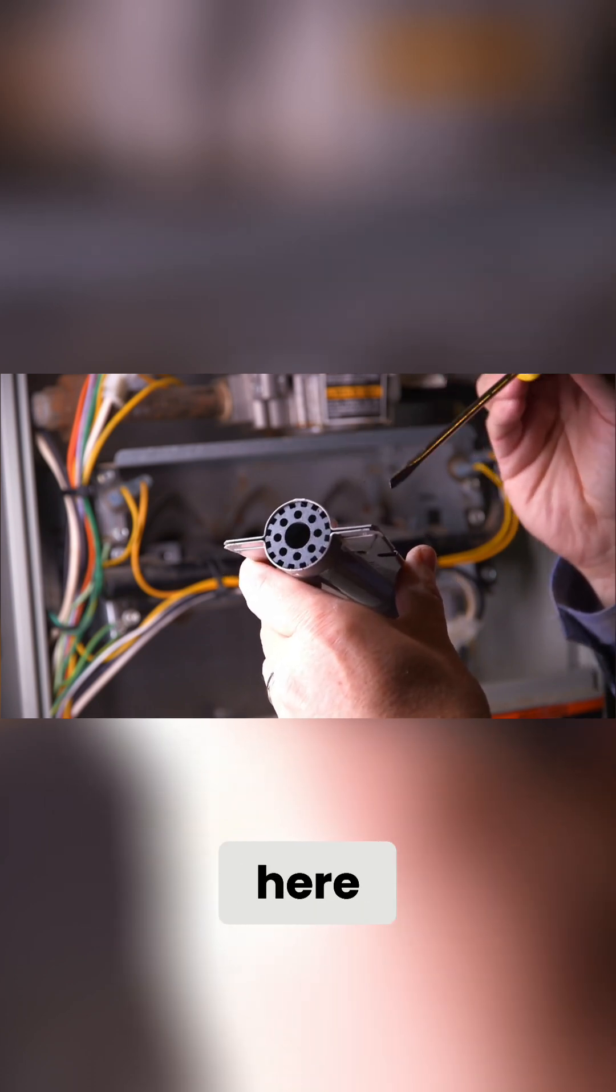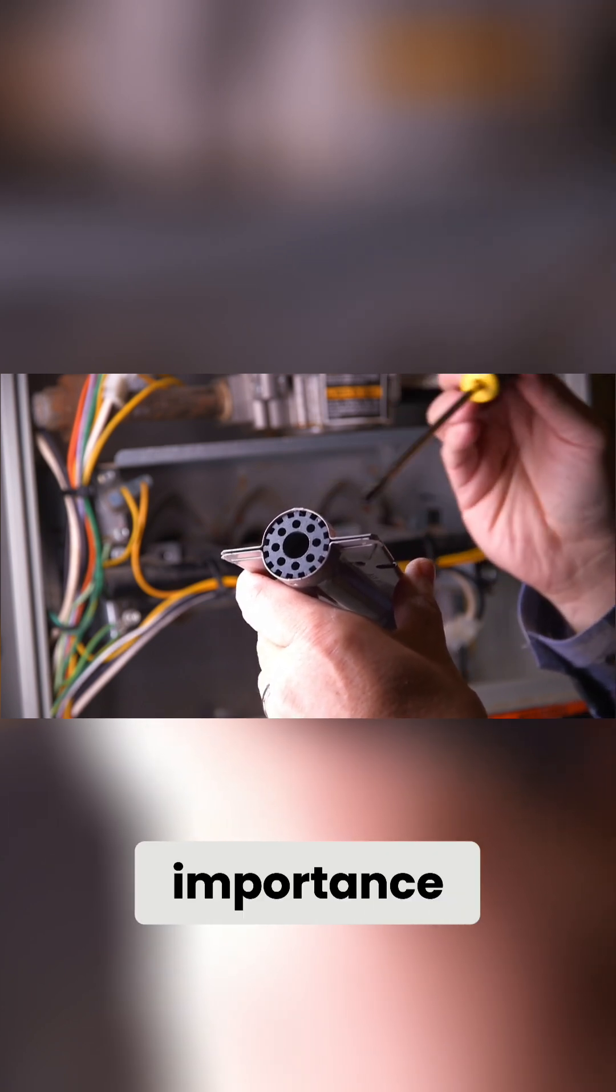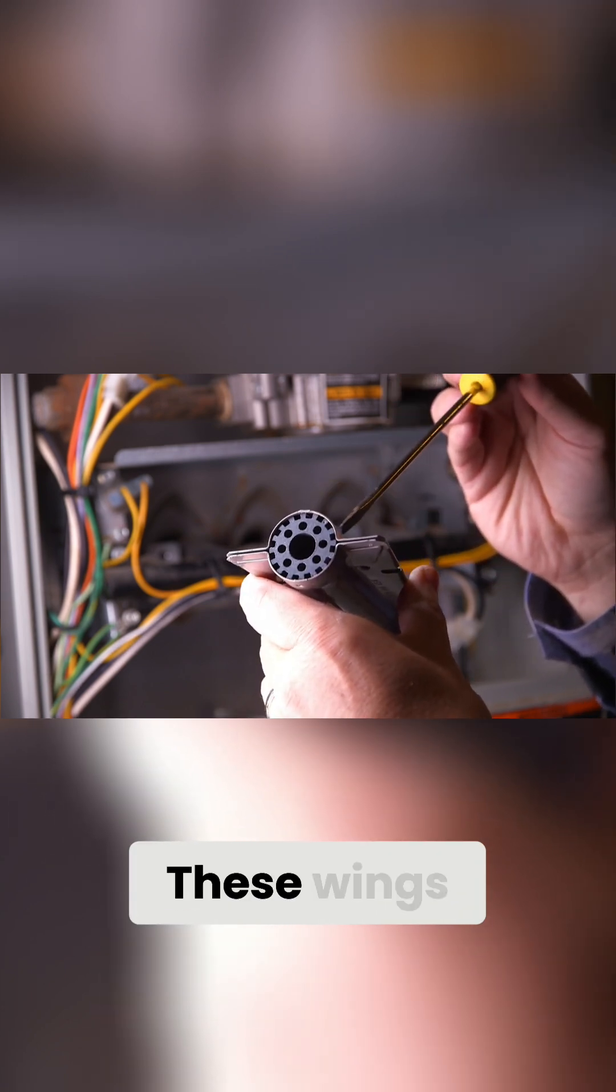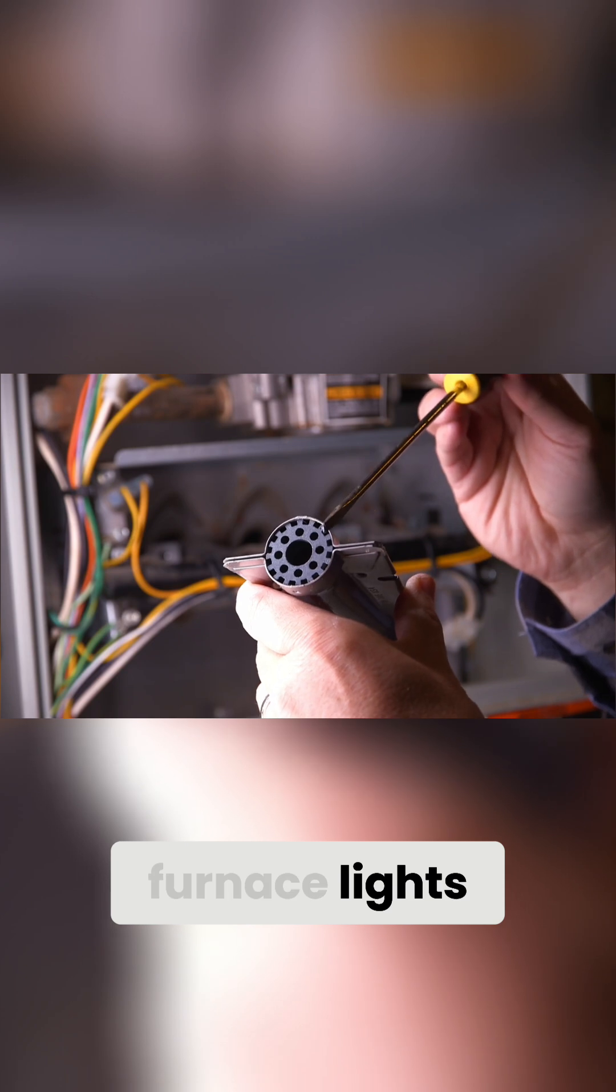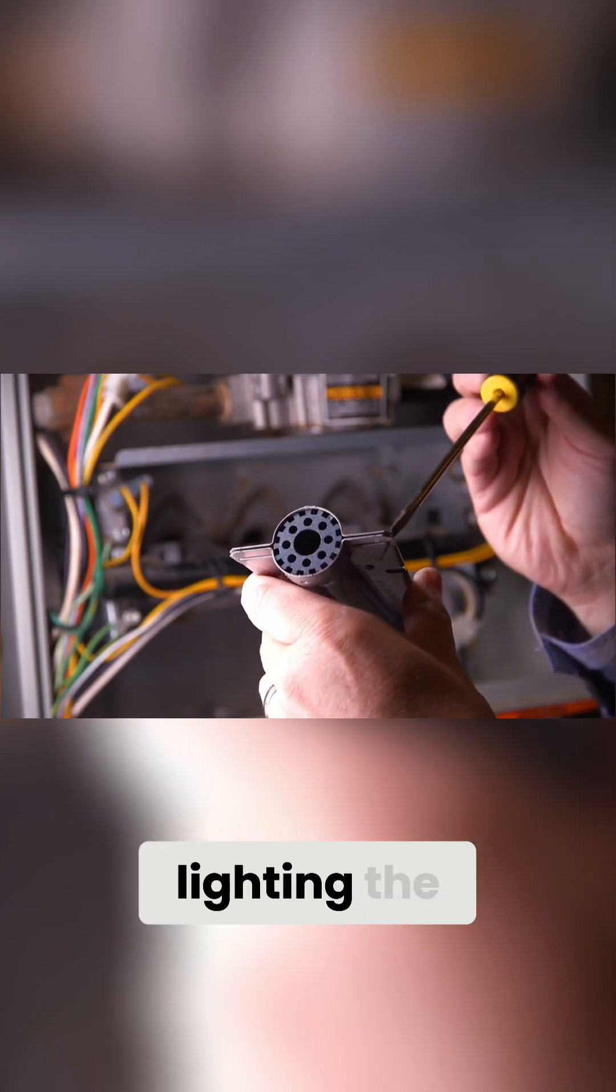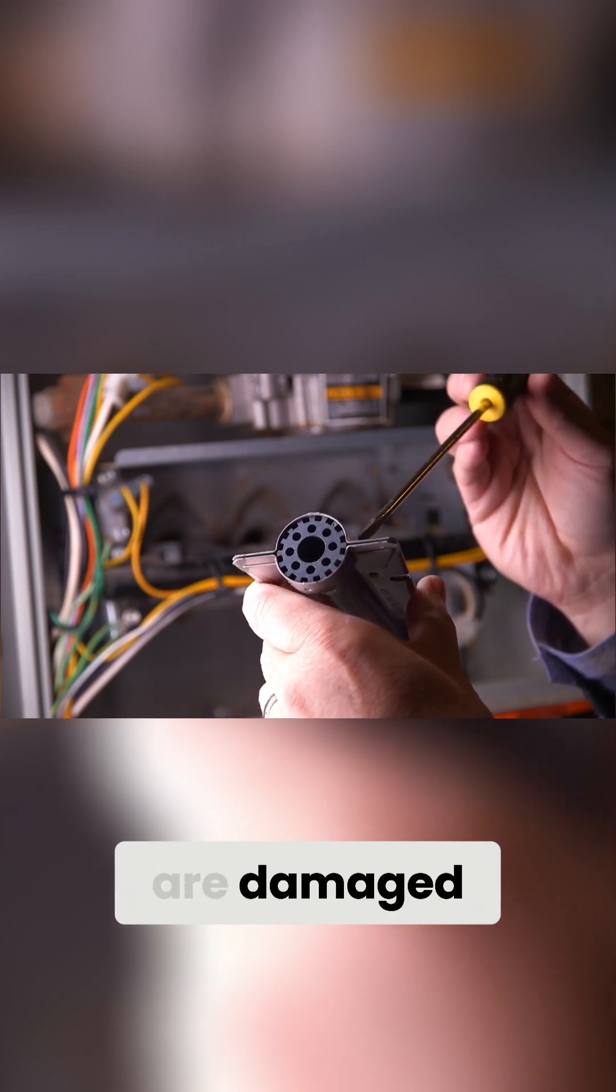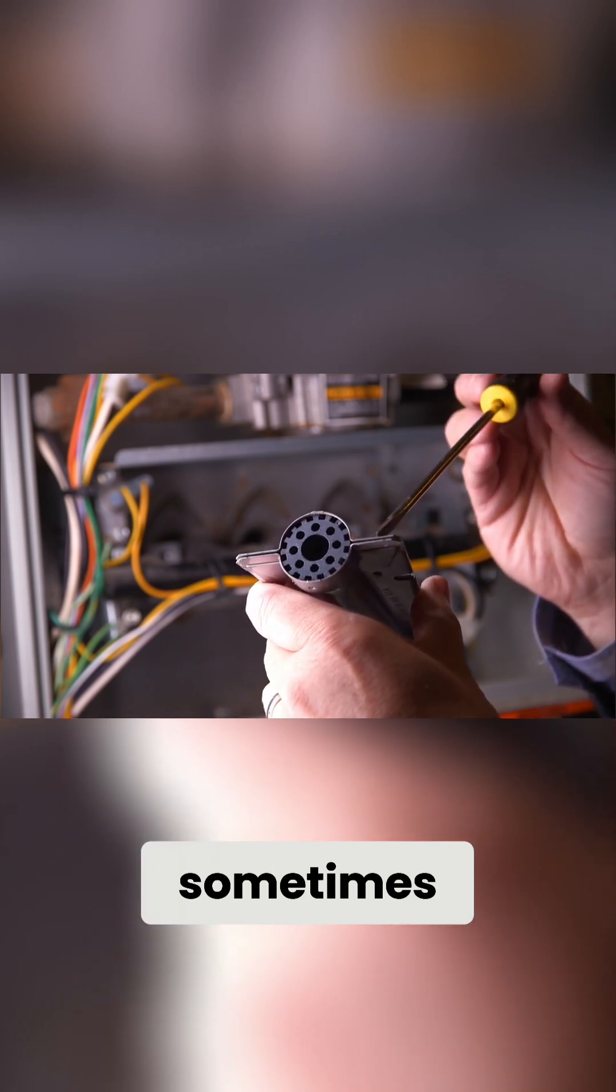And these wings right here are really of primary importance. These wings, when the furnace lights, allow the flame to propagate to the next burner over, lighting the next burner. If these wings are damaged, dirty, sometimes they're completely corroded and full of rust.